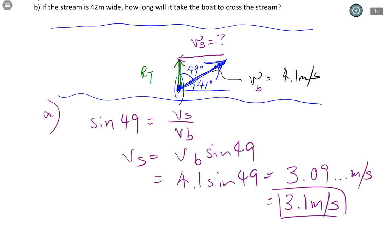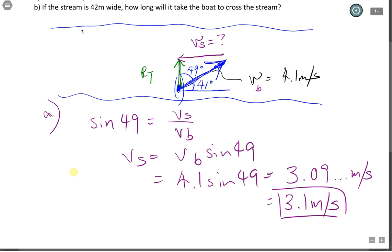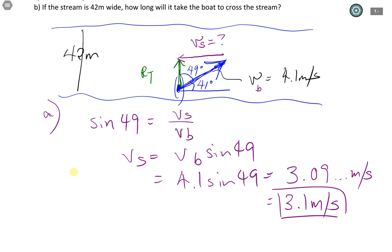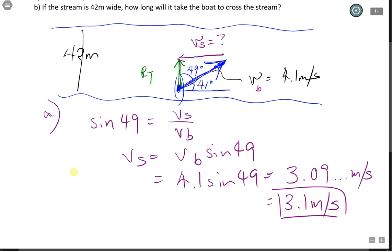B. If the stream is 42 meters wide, this stream here is 42 meters wide, how long will it take the boat to cross the stream? Please be careful. If you are looking for the component of your boat moving across the stream, this one is not this vector over here, not your boat's speed, but this resultant speed over here. If you think about it, your boat's fighting your current, which means some of the horizontal component is being wasted in fighting the current, which means this resultant is going to be smaller than your speed of your boat. So that means we need to use this one. We need to use the resultant vector.